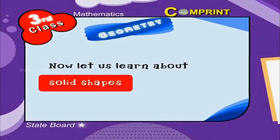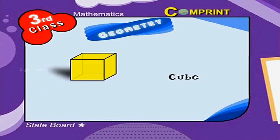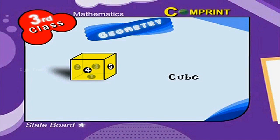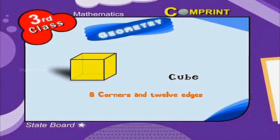Now let us learn about solid shapes. This is a cube. It has six plain surfaces, eight corners, and twelve edges.